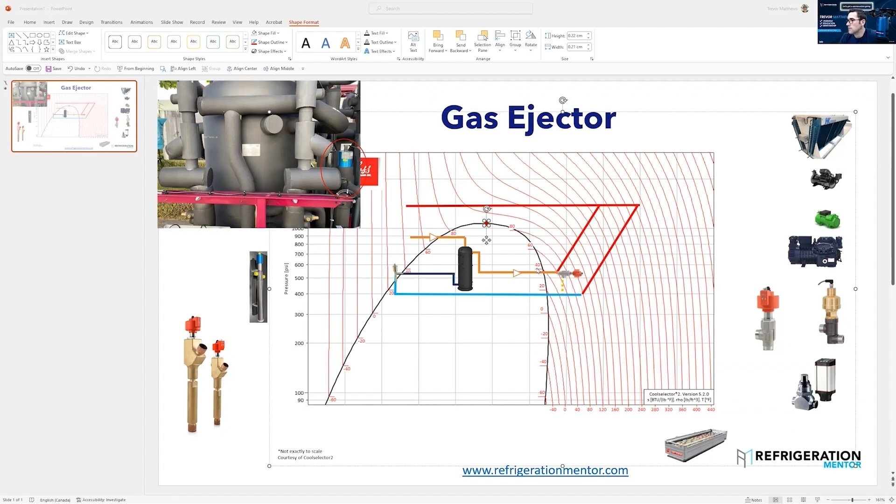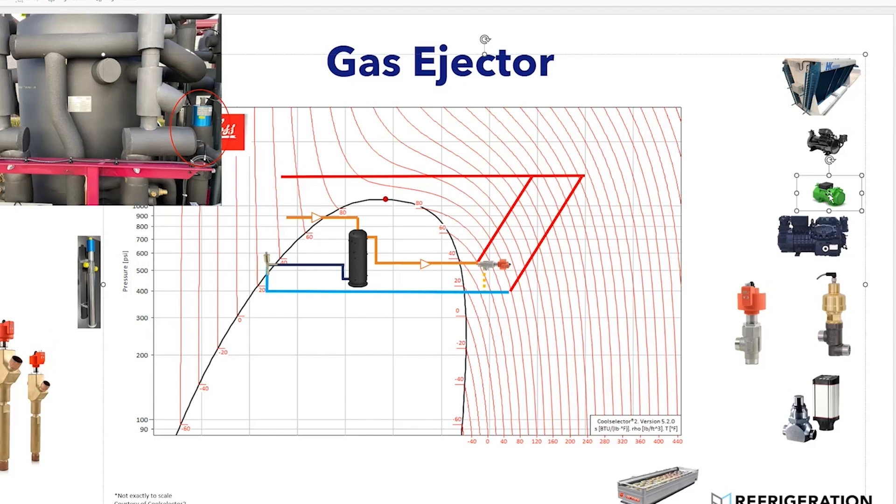This is kind of what it looks like. I'm going to grab a compressor and throw a Bitzer one. This would be our medium temp compressor, not to scale. This is the Danfoss Cool Selector 2 app I'm using here.